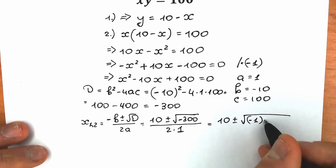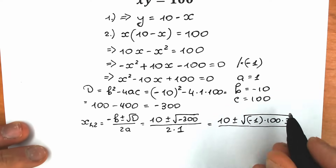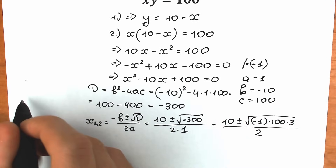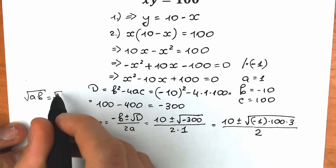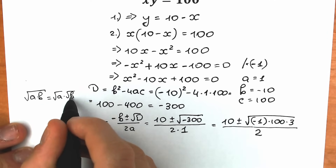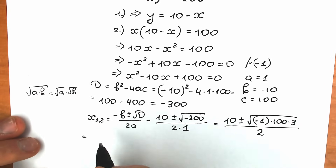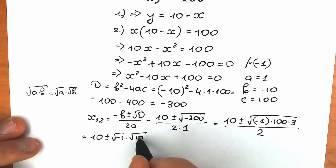Using the property that square root of (a times b) equals square root of a times square root of b, we write: 10 plus or minus square root of minus 1 times square root of 100 times square root of 3, all divided by 2.